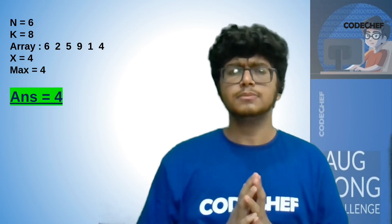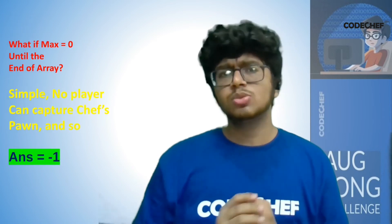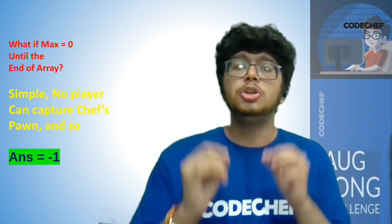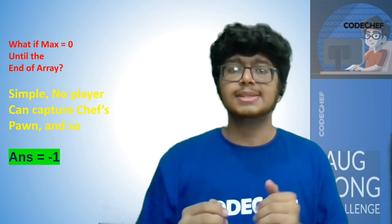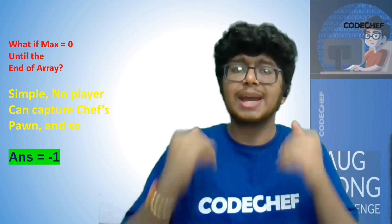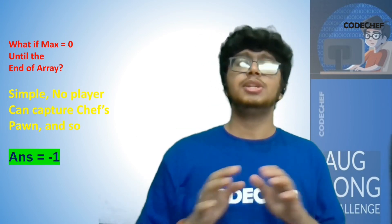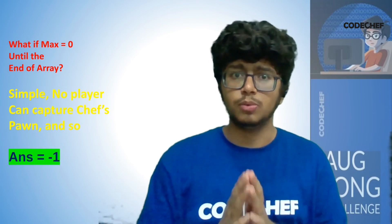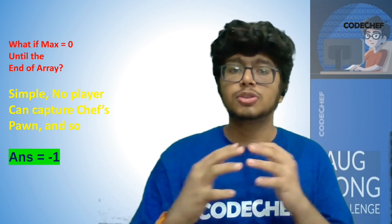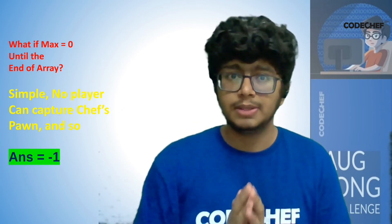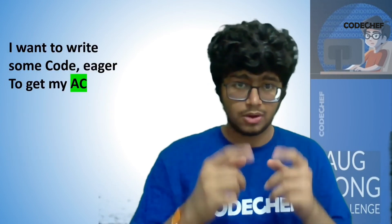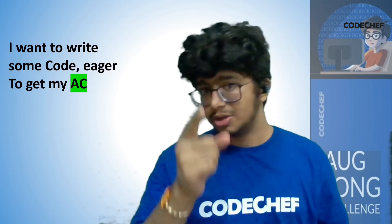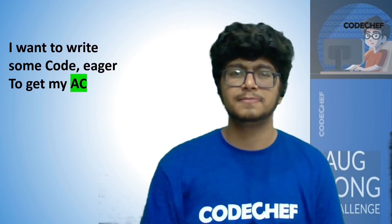Our answer is 4. You might ask: what if max is still zero? That would mean no number in the array is a multiple of K, so no player can capture our chef's pawn — we print -1. This is the complete walkthrough of what our code will do, and it is as simple as that.